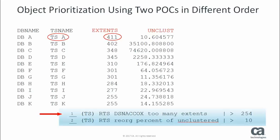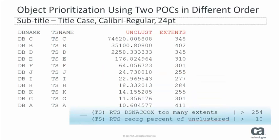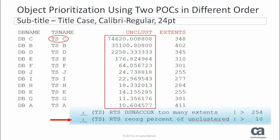For example, look at the objects where Extents equals 301 and Extents equals 255. As the arrows indicate, they are listed in descending order by the percentage of unclustered data. Now let's see what happens when we change the priority order of the POCs. This list shows the same objects, but now they are ordered by the Unclust value. Tablespace C now has the highest priority. In this scenario, all of the Unclust values are unique, so the Extents values are not needed.